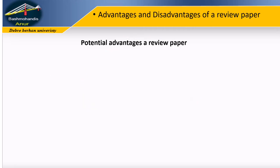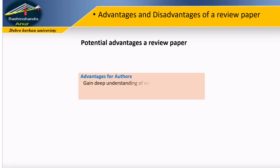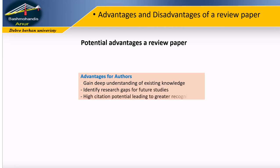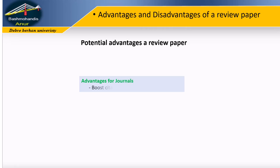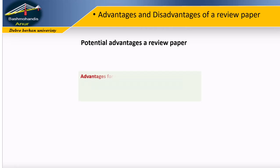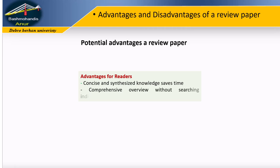Advantages and disadvantages: the author will benefit from understanding the existing knowledge, providing an opportunity to identify solid gaps. A key advantage for authors is the potential for high citation rates, meaning greater recognition, and for journals it boosts their citation scores. Readers benefit because review papers provide concise and synthesized knowledge, saving time by presenting a comprehensive overview without the need to search through numerous individual studies.